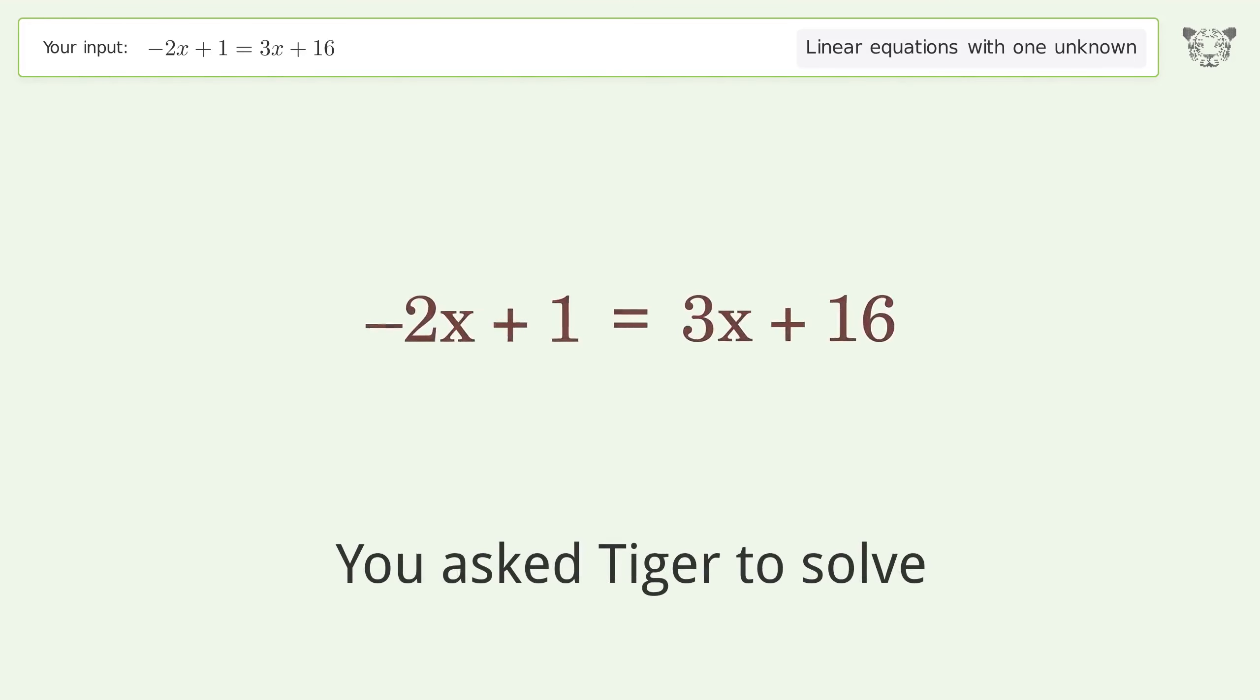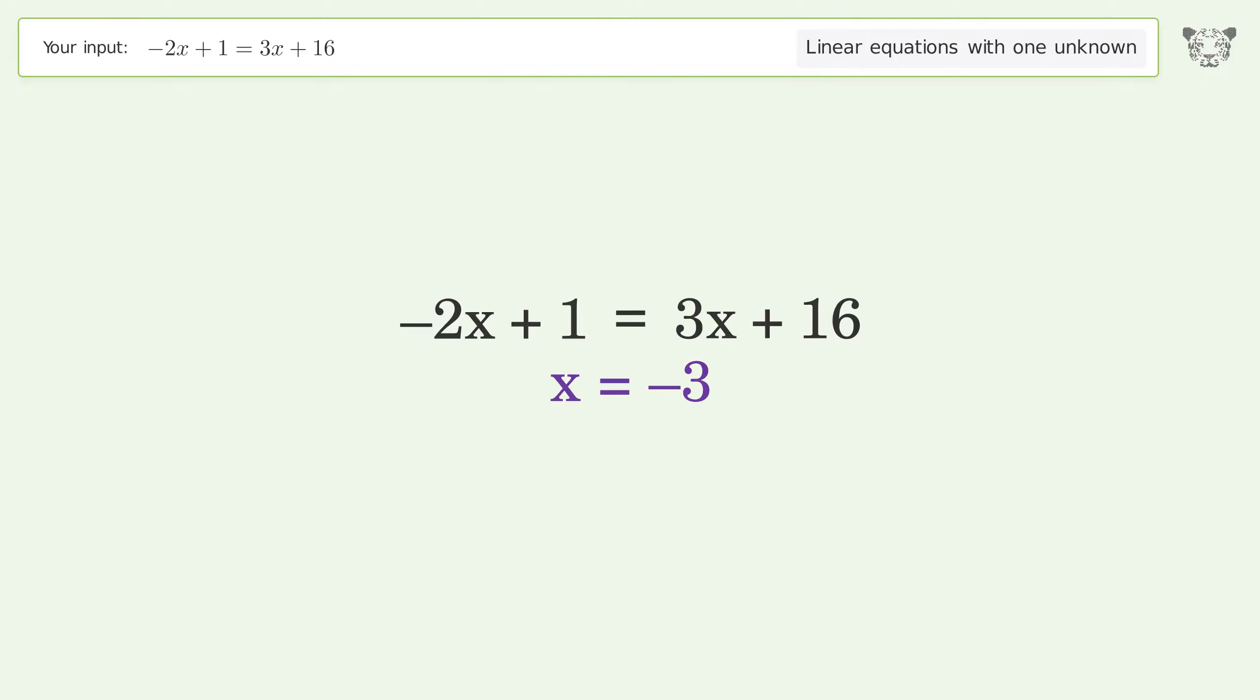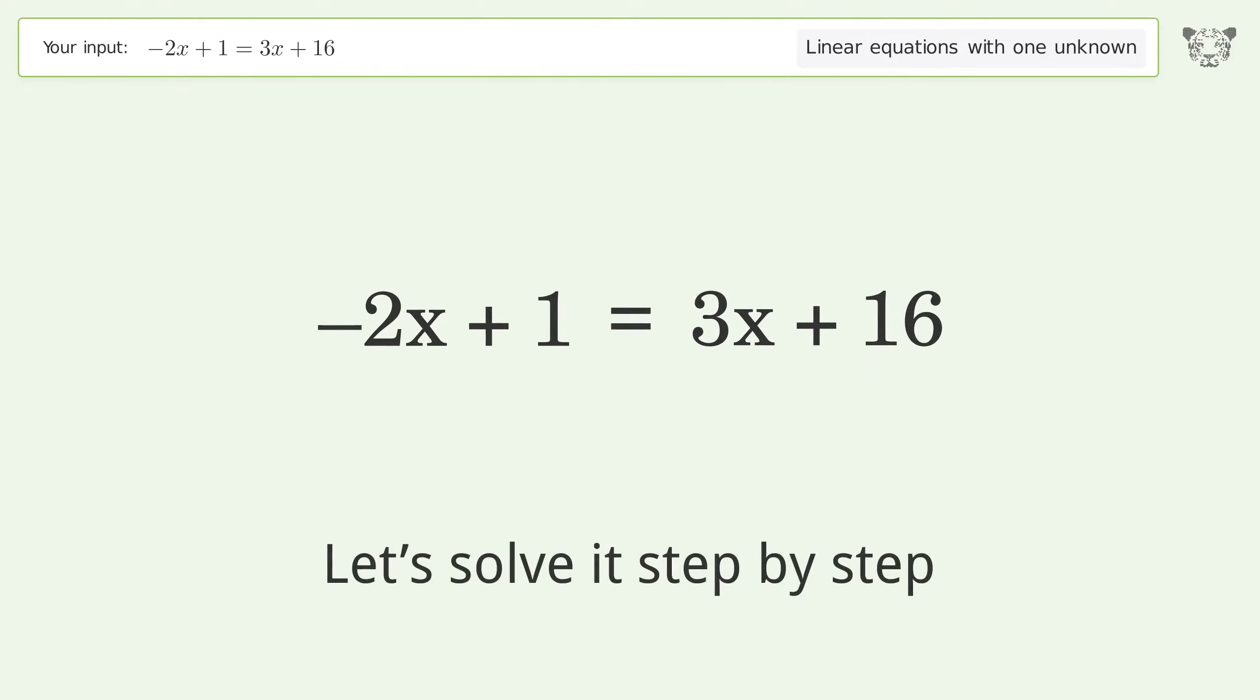You asked Tiger to solve. This deals with linear equations with one unknown. The final result is x equals negative 3. Let's solve it step by step.